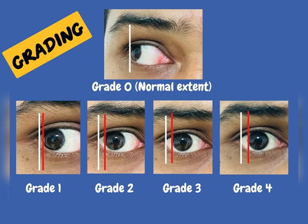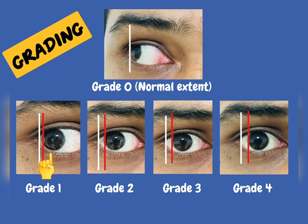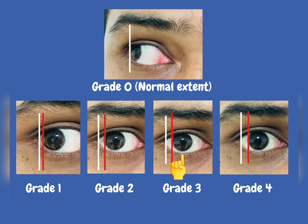Once the test is done, grading and documentation become an important part. The white line indicates the actual ocular movement the eye should have, and the red line indicates the movement present at that point in time. For grade zero (normal), the sclera should be concealed by the canthus in normal horizontal version. Grade one: sclera is just visible. Grade two: inability to abduct or adduct the eye more than halfway. Grade three: inability to abduct or adduct the eye more than a quarter of the way. Grade four: inability to move at all from the primary position.